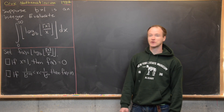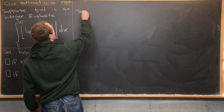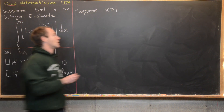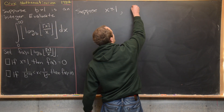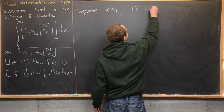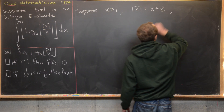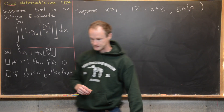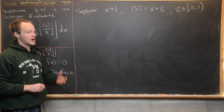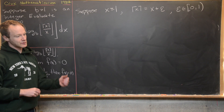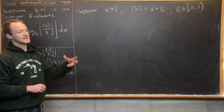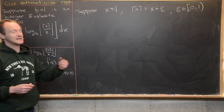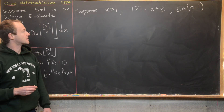Let's look at the first lemma. Suppose x is greater than or equal to one. Notice that I can write the ceiling of x as x plus epsilon, where epsilon is on the half-open interval zero to one. The ceiling function is a round-up function — it rounds something like 6.2 up to seven, so in that case epsilon would be 0.8, because that's what it takes to get to the next integer.